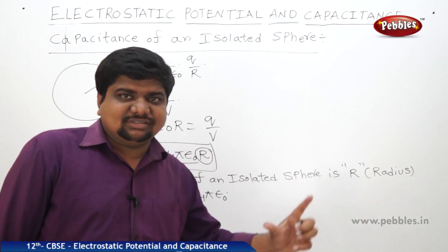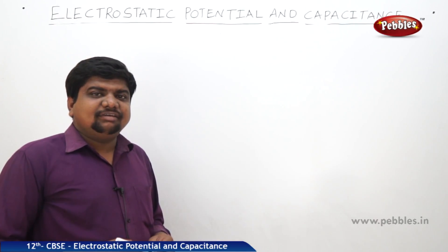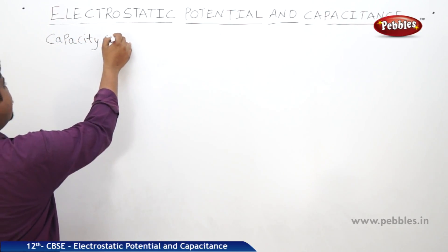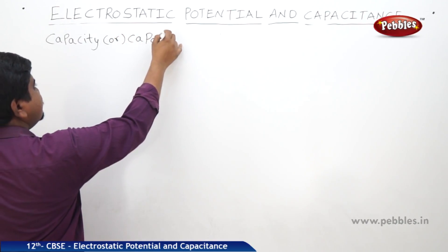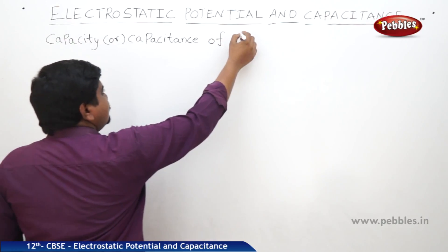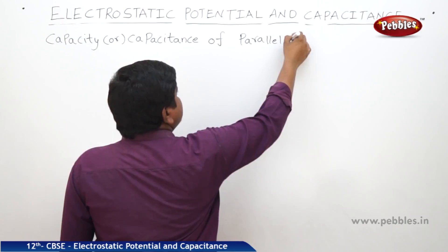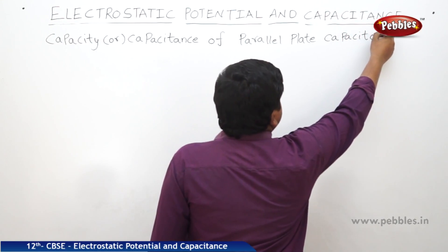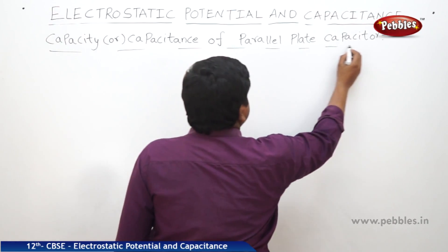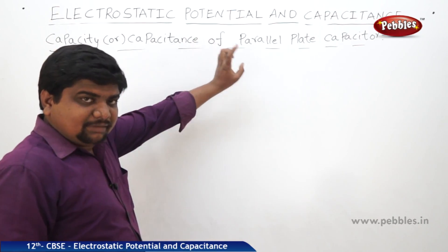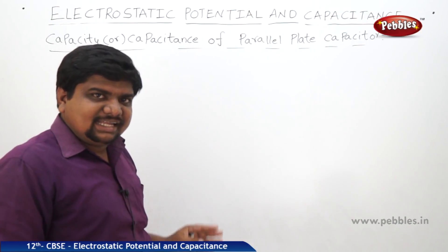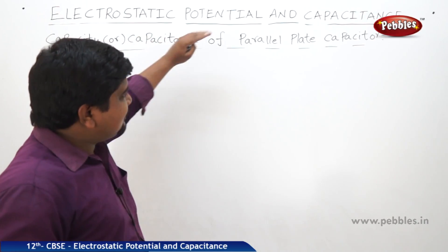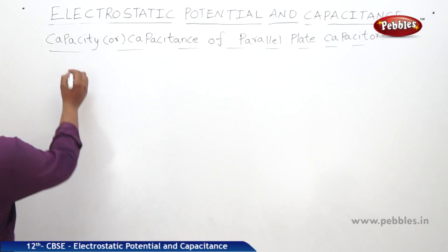Now we will find the capacitance of a parallel plate capacitor. Since no medium is mentioned in the heading, air is acting as the medium between the plates. The next case will involve a dielectric medium placed between the plates. Let us examine what the capacitance of a parallel plate capacitor is when air serves as the medium.